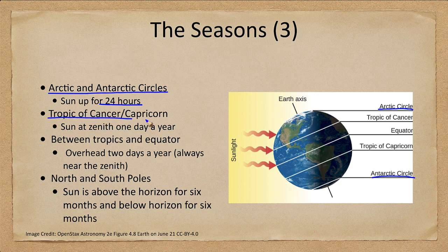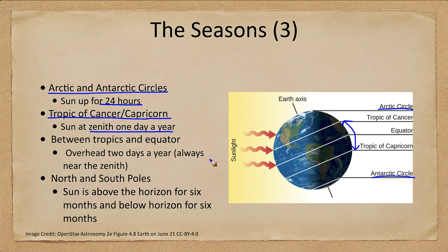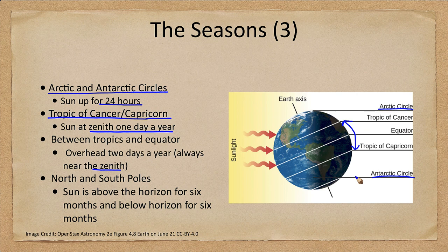We also have the tropical regions — the Tropic of Cancer in the northern hemisphere and the Tropic of Capricorn in the southern hemisphere. If you're within that range, you are always going to have the Sun at the zenith at least one day a year; for the tropics exactly one day a year. In between, you would have the Sun overhead two days a year, but it's always close to the zenith — close to straight overhead no matter what time of year. The Arctic regions, while the Sun may be up for a long time, it is also very low in the sky, so that energy is all spread out and those areas do not get very warm.